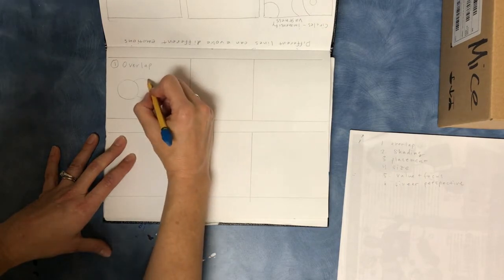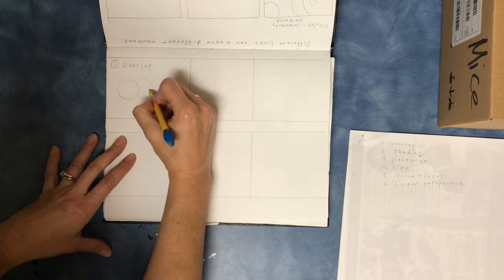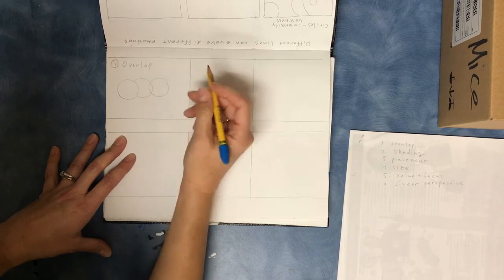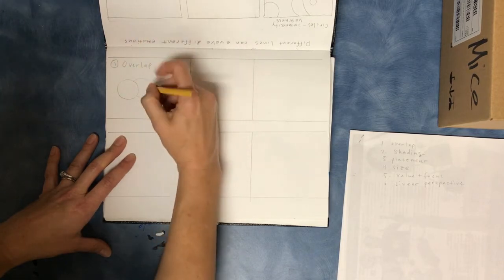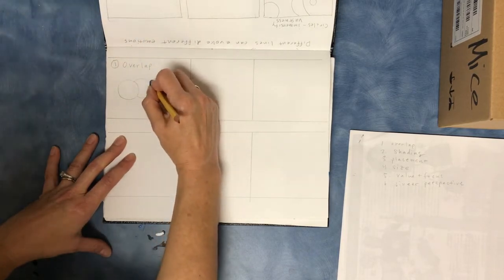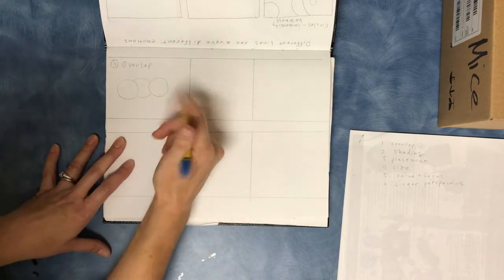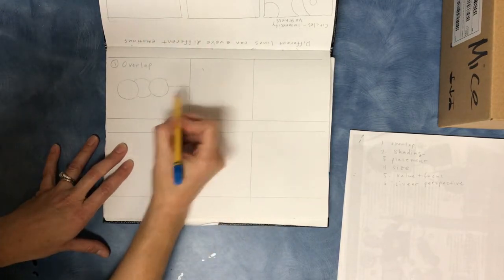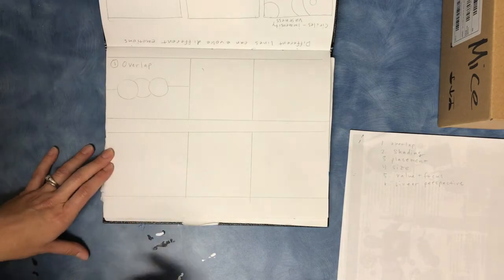Okay, and then we can do it again. And then we can erase this line. And then I'm just going to put a horizon line like they're sitting on a table.